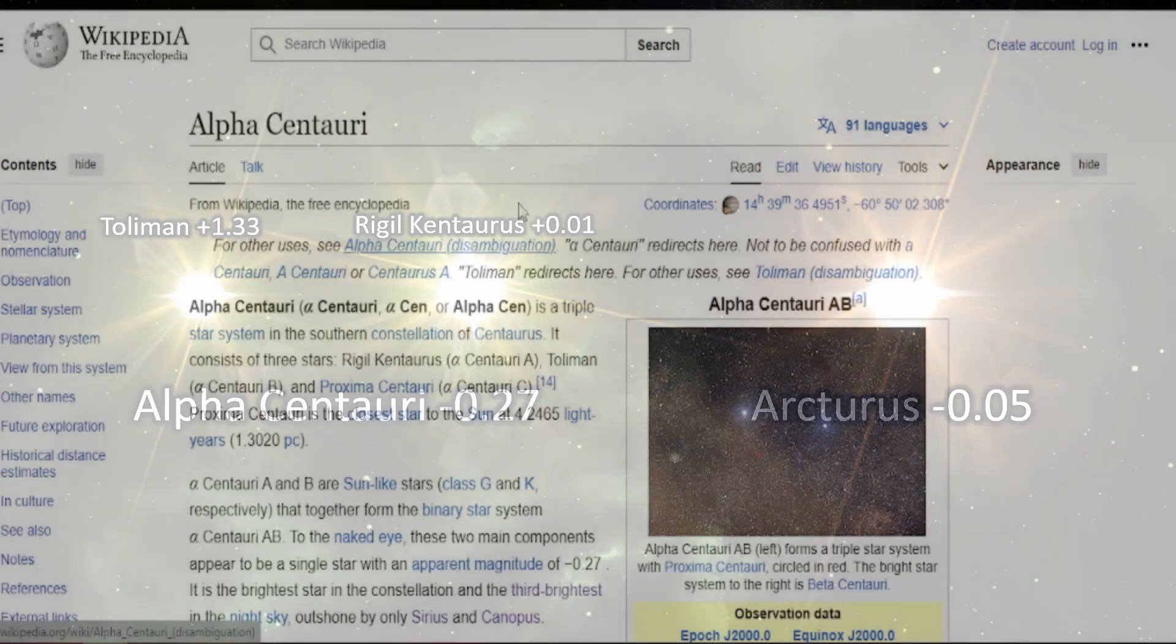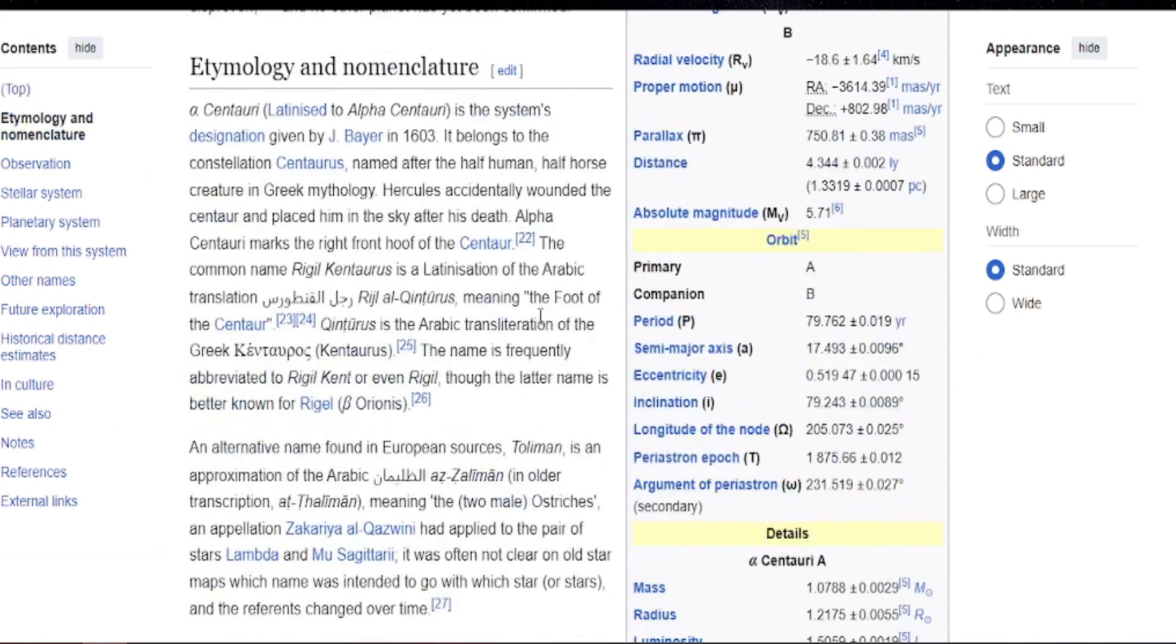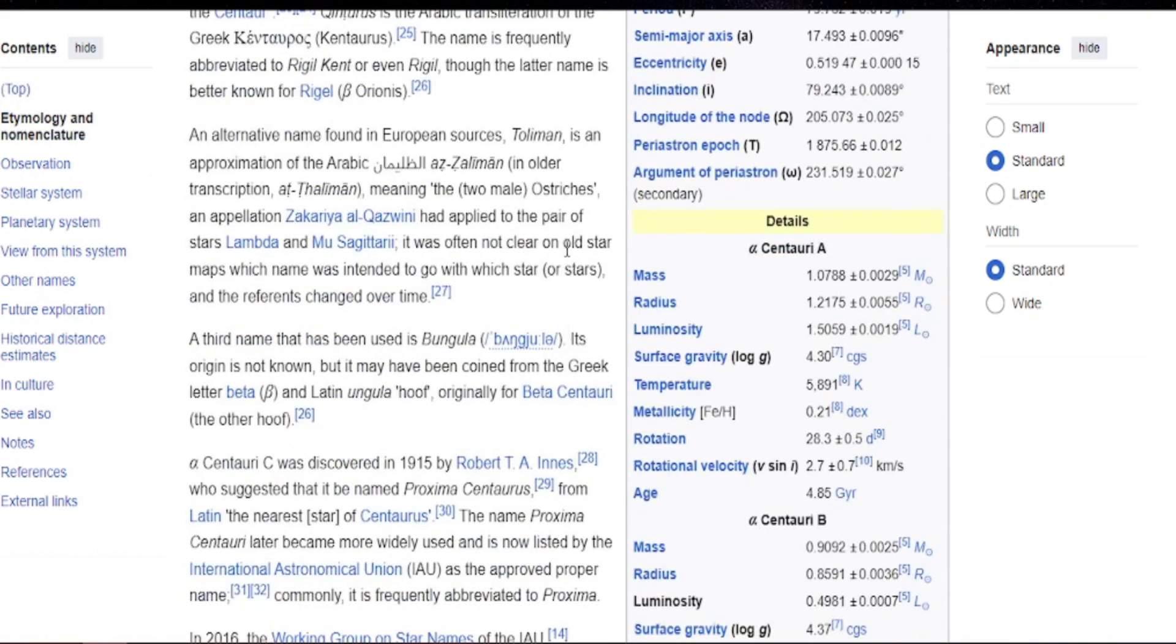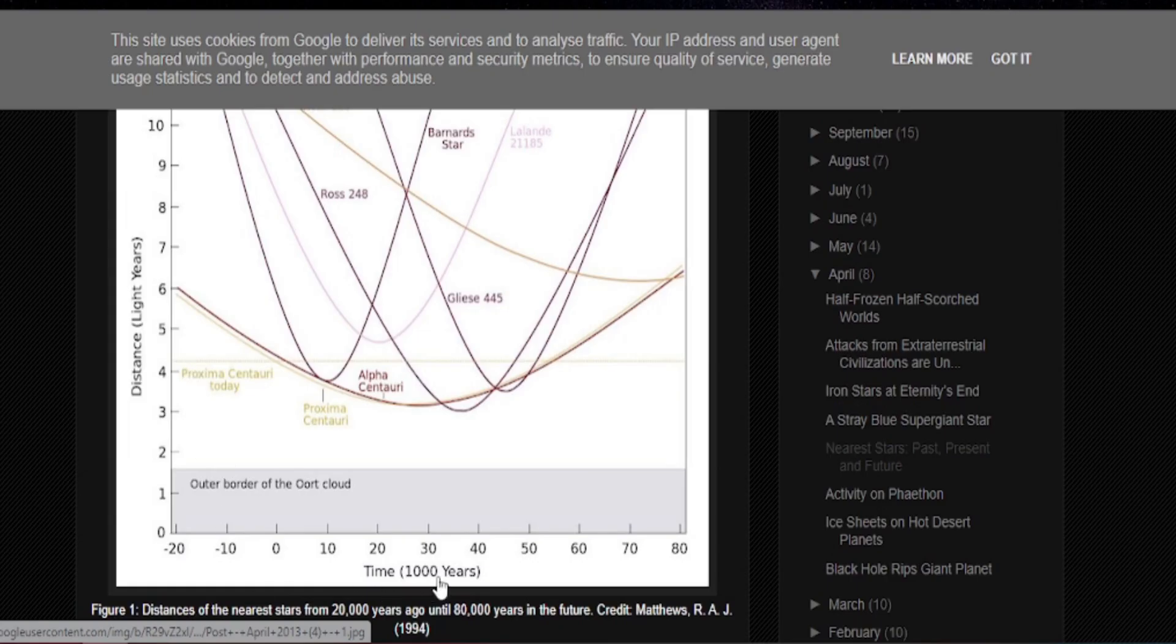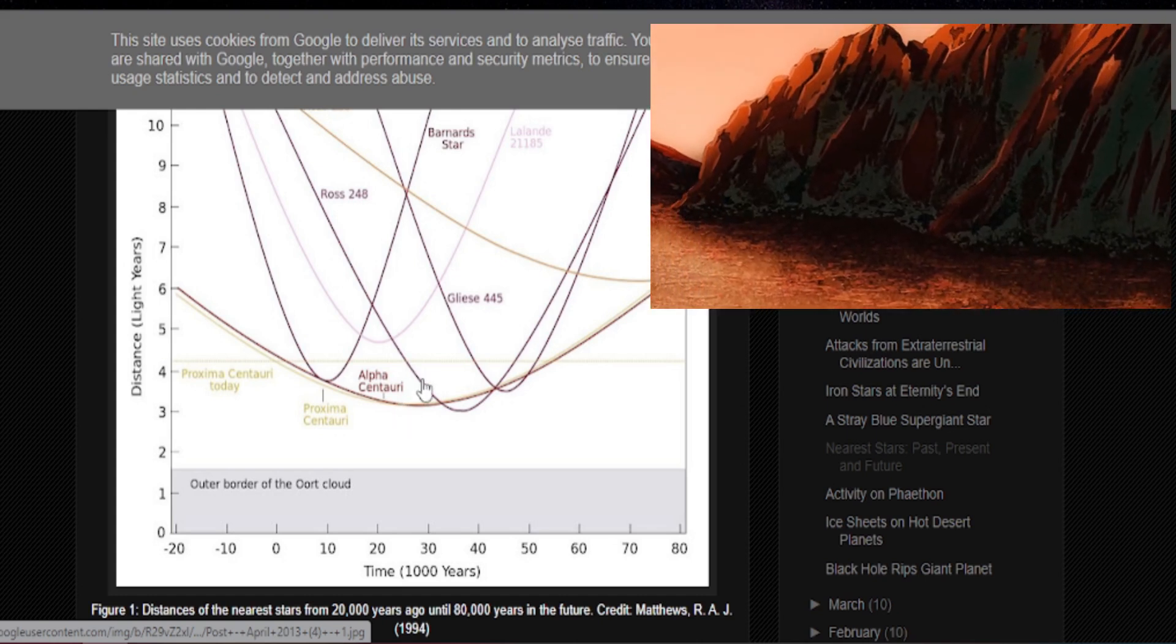Let's have a quick look at Alpha Centauri. I won't spend too much time on it because it's a star that's talked about a lot. And of course, Alpha Centauri is approaching our solar system. You can see here, this is sort of 1,000 years. So in about 28, 29,000 years, it will reach to about three light years from us. So Alpha Centauri will increase in brightness.